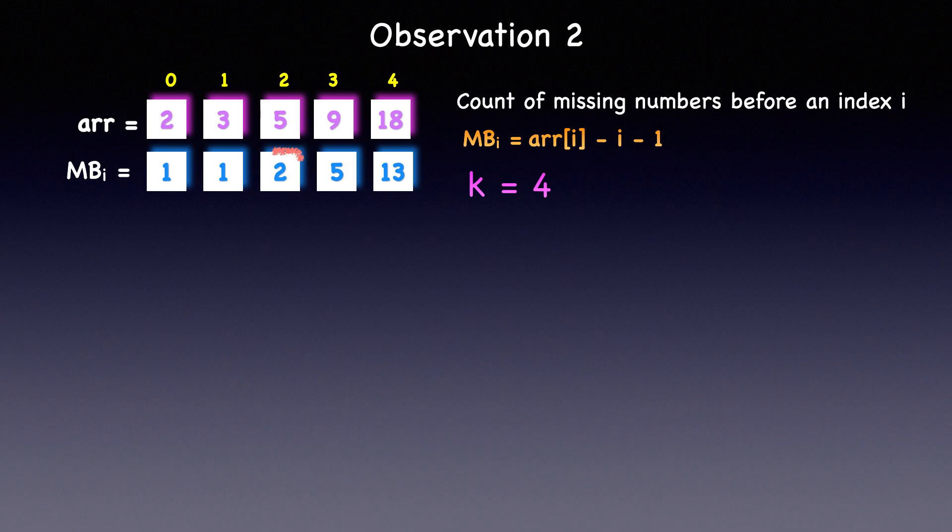So, there are 2 missing numbers before the index 2 and 5 missing numbers before the index 3. Hence, the 4th missing number will lie between index 2 and 3. So, the second observation we make is that there will always be a lower bound and an upper bound index between which the kth missing number will be located. In our solution, we can always create an array to track the count of missing numbers before each index, as demonstrated here.